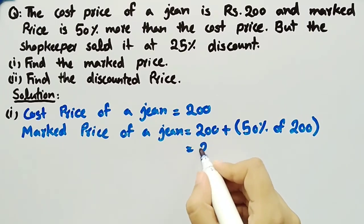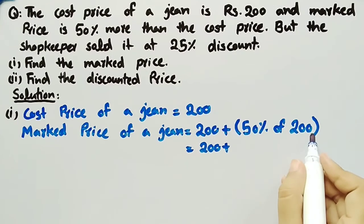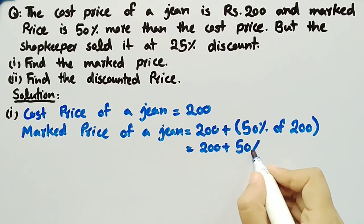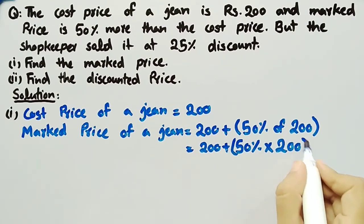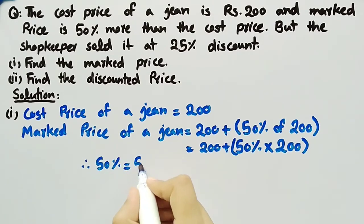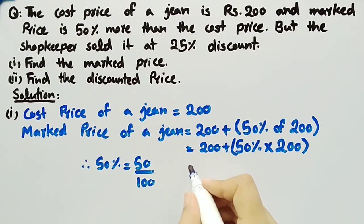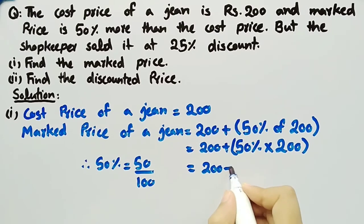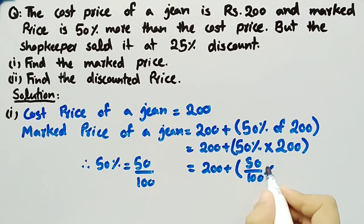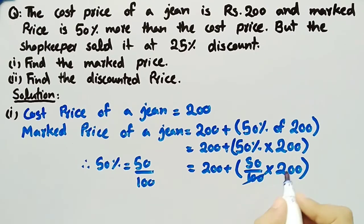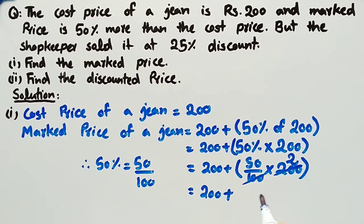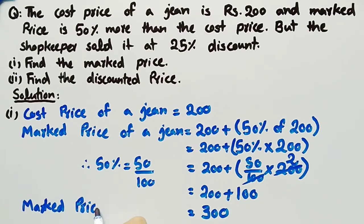We can write it as 200 plus 50% of 200, which can be written as 50% multiplied by 200. Since we know that 50% is equal to 50 divided by 100, we can rewrite it as 200 plus 50 divided by 100 multiplied by 200. 2 times 100 is equal to 200, and we are left with 200 plus 50 times 2, which is 100. So 200 plus 100 is equal to 300, which means the marked price of a jean is equal to Rs. 300.